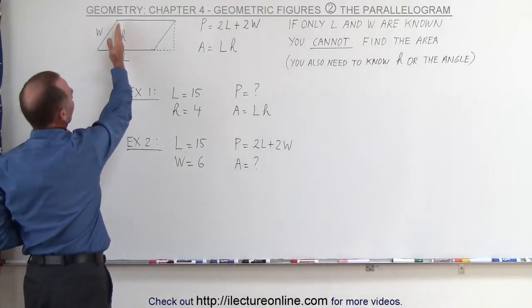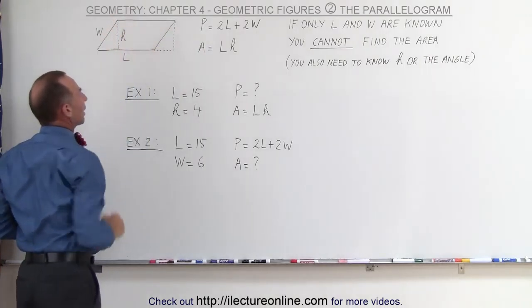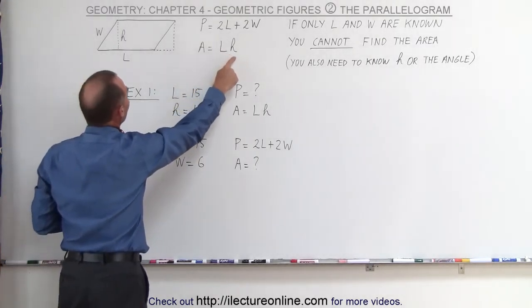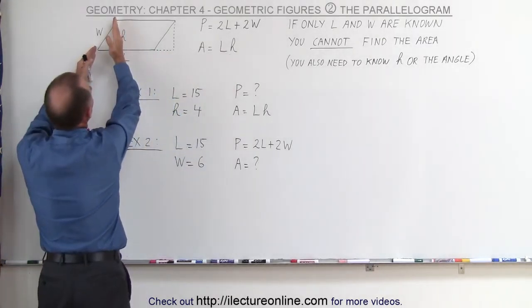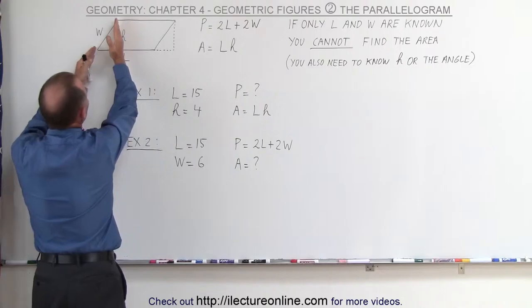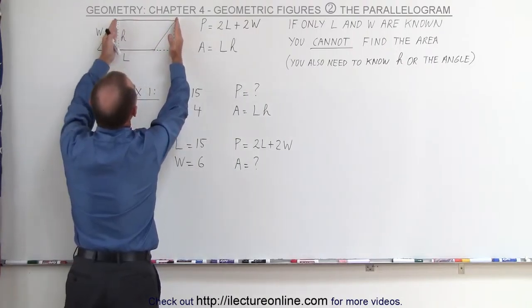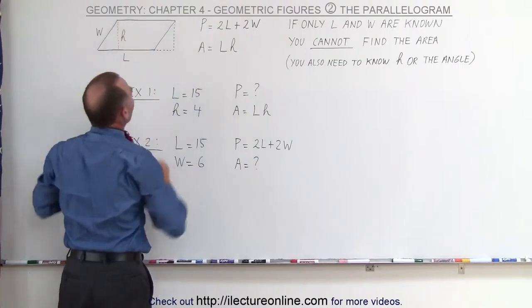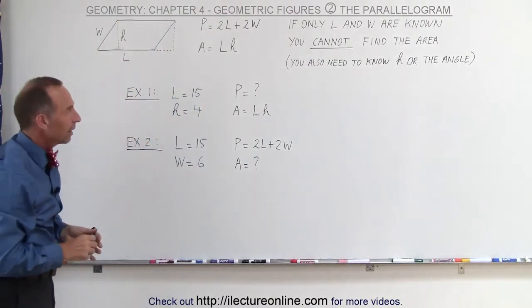Of course, you can draw the line anywhere you like, but it's typically drawn right there. Notice why the area would be the length times the height. If we chop out this little piece of the parallelogram and move it over here, we then have ourselves a rectangle where this will be the length and this will be the height.